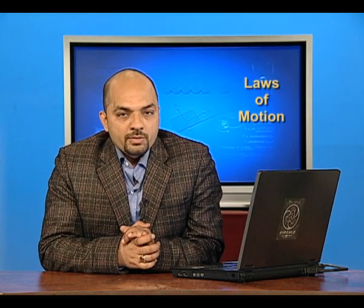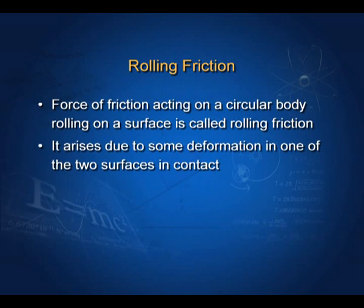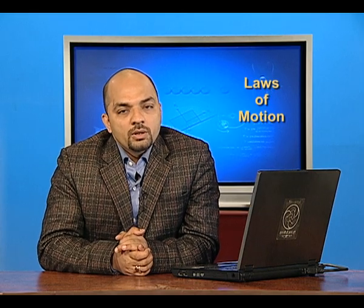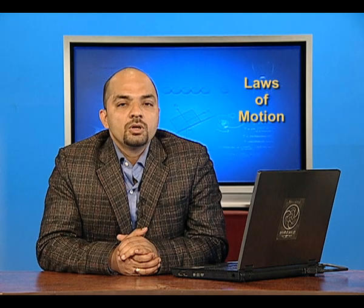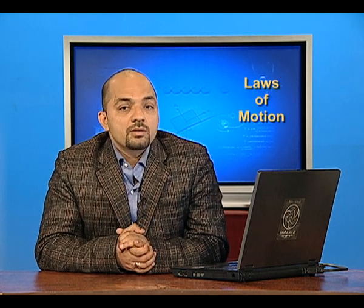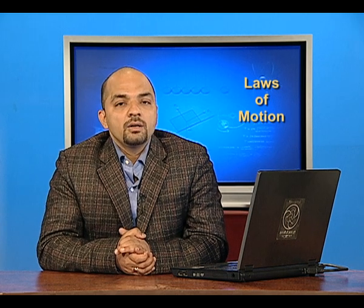Rolling friction is the last type of friction. The force of friction acting on a circular body rolling on a surface is called rolling friction. It arises due to some deformation in one of the two surfaces in contact. For example, a car tire parked on the road gets slightly deformed, and this deformation is responsible for rolling friction.